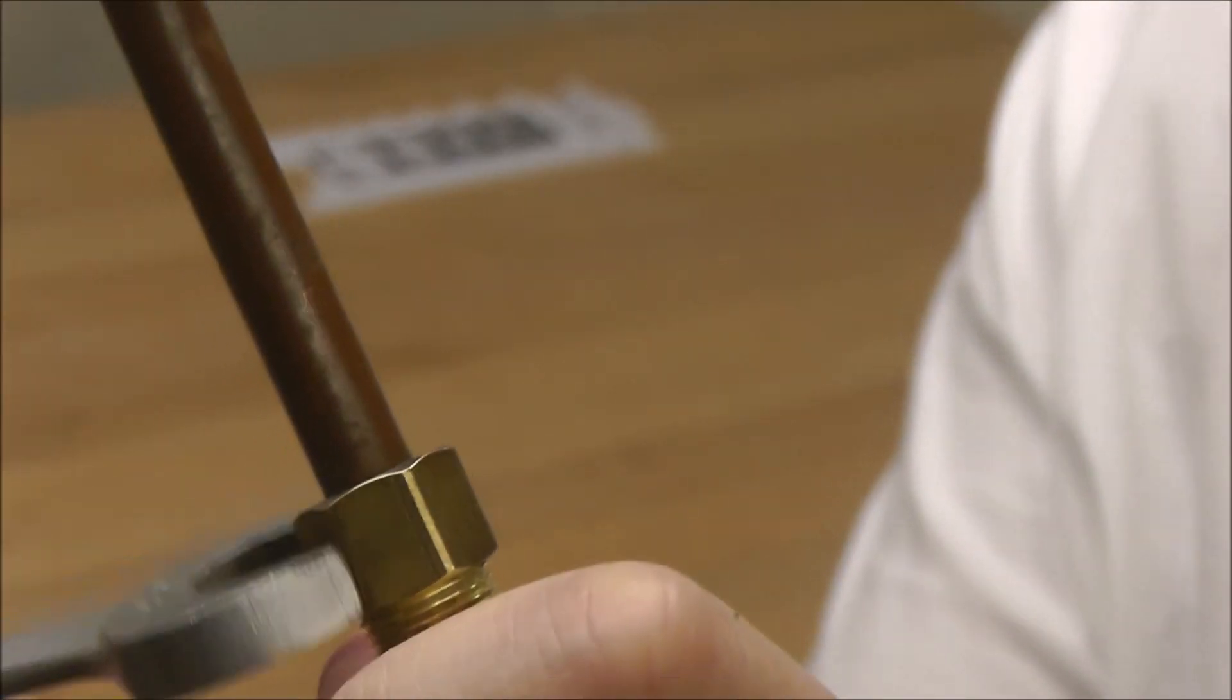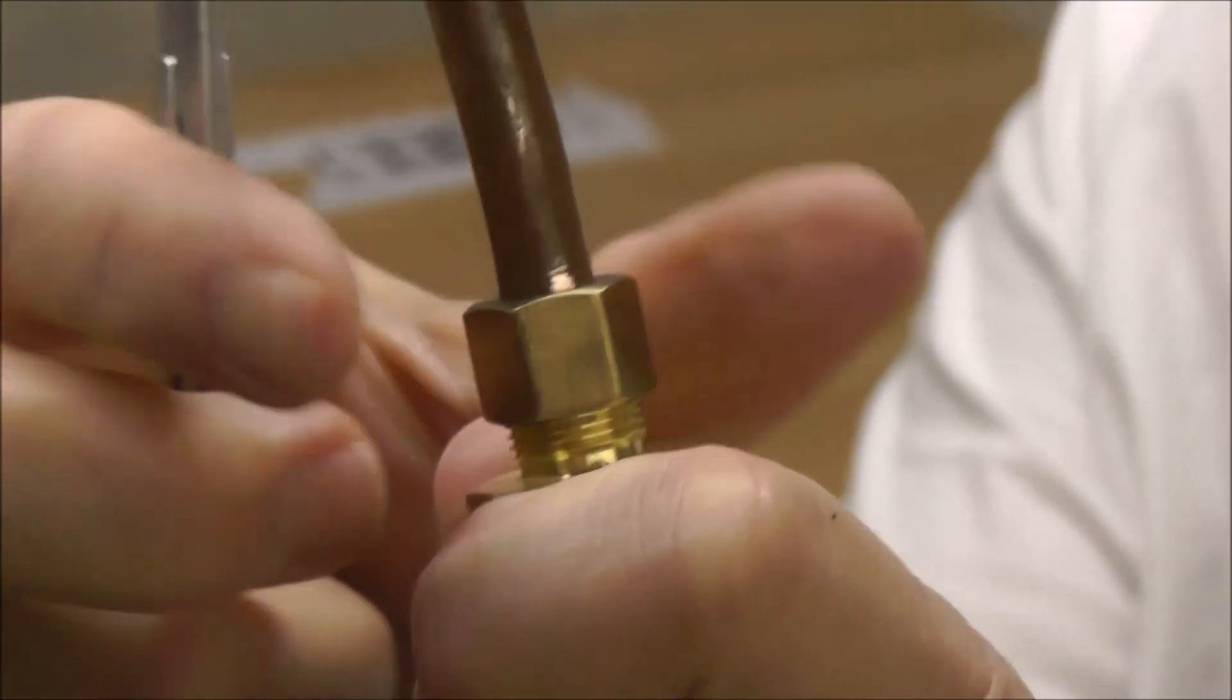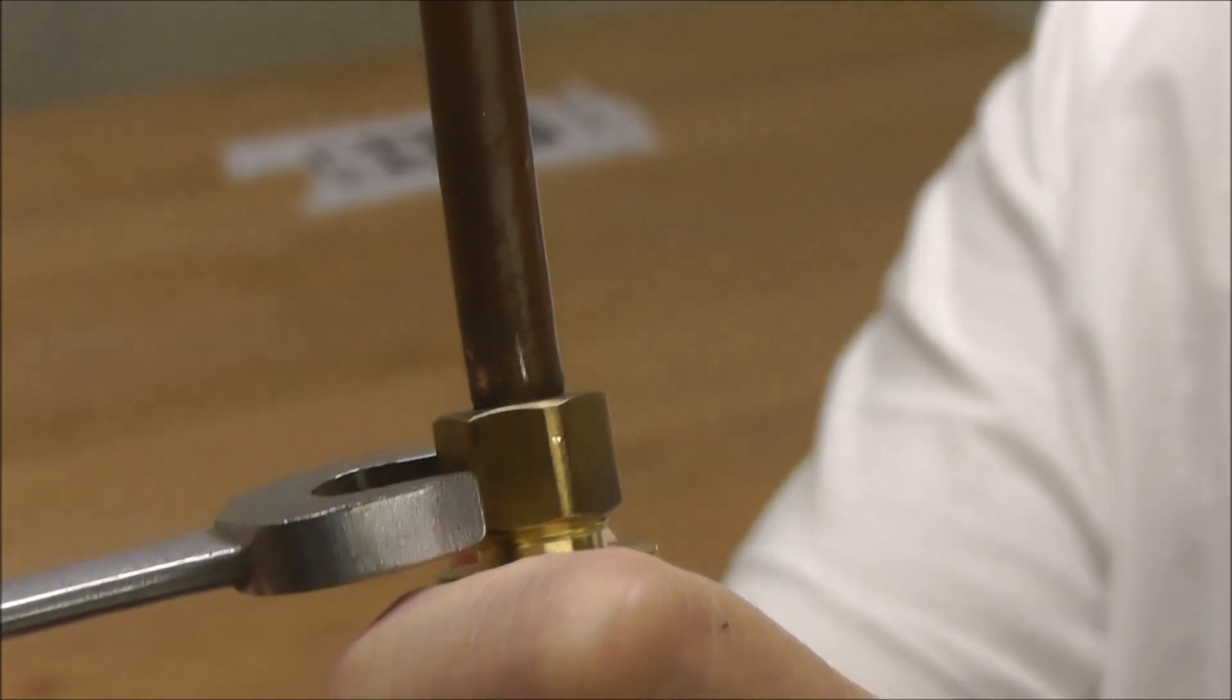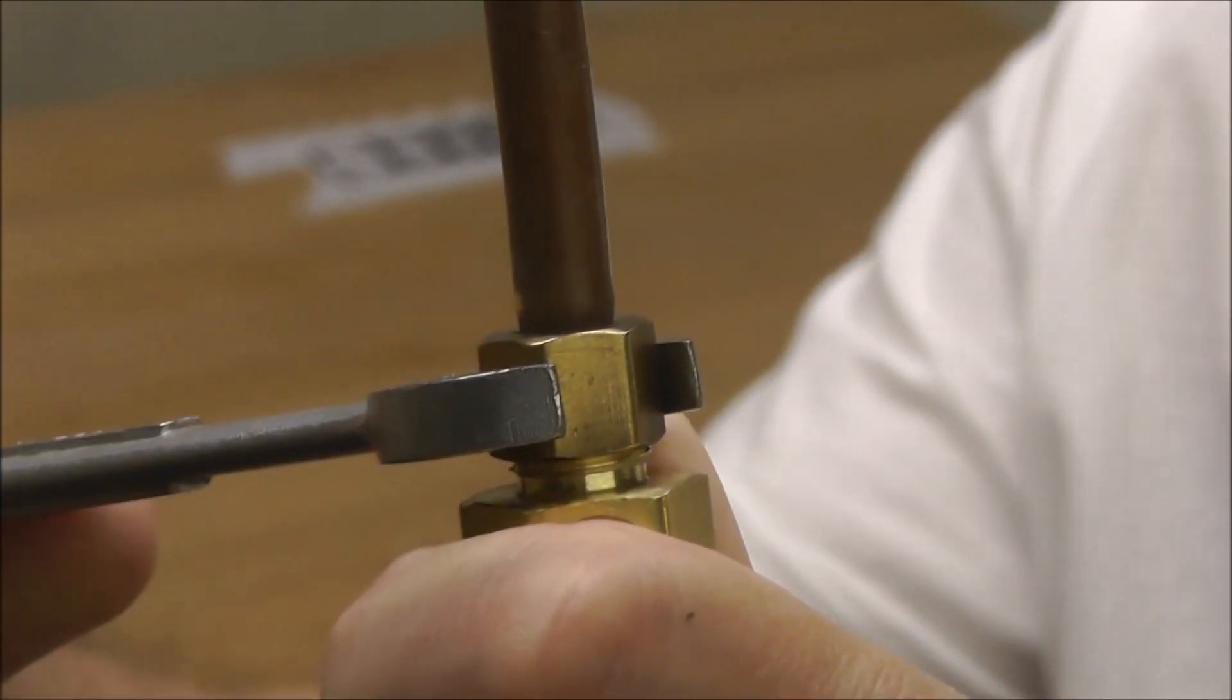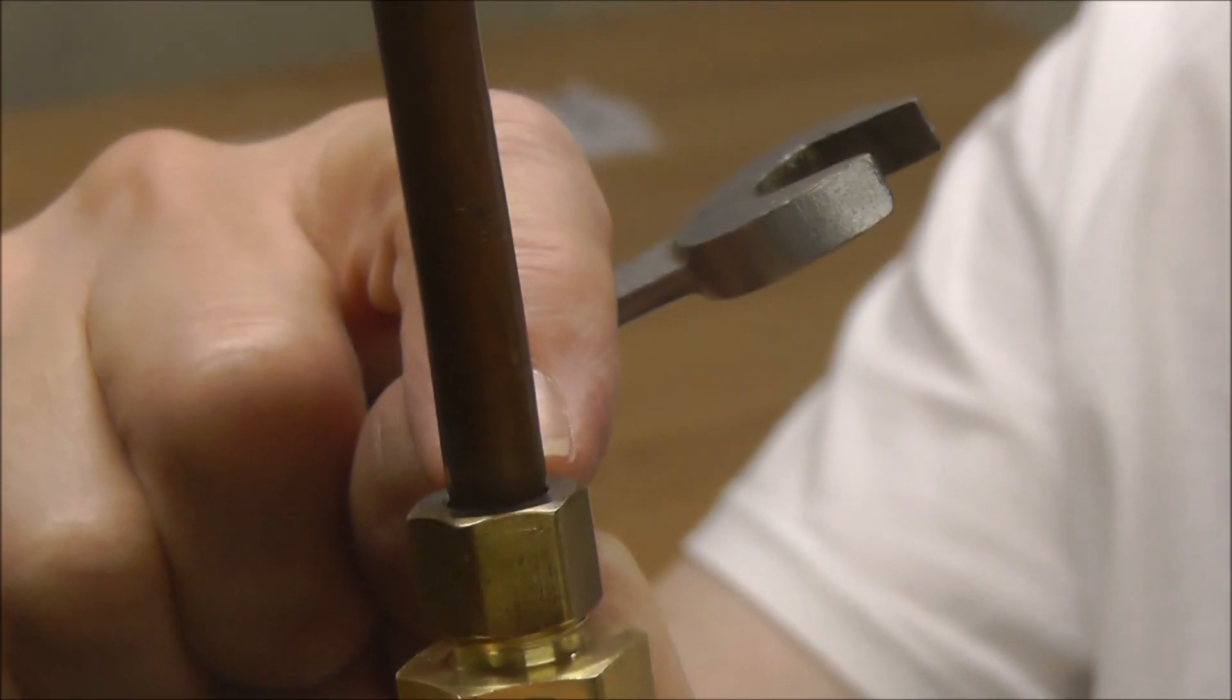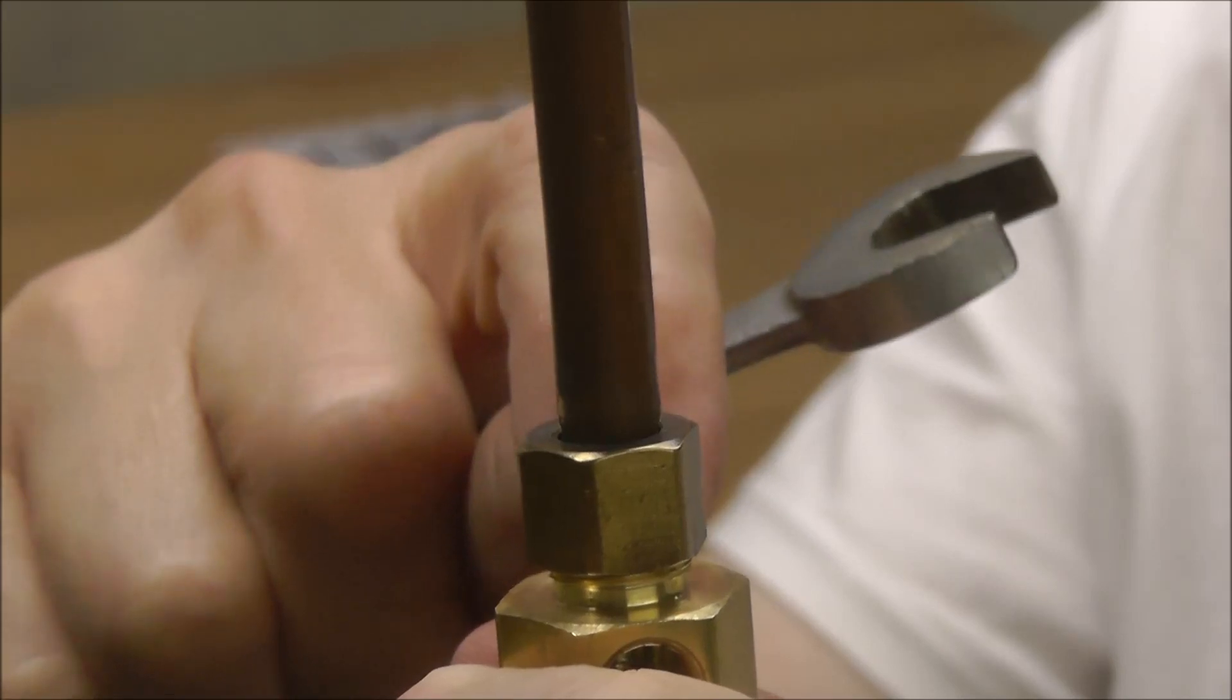You want to tighten it down pretty good because this compression ferrule in there needs to be able to squeeze against this pipe and it needs to tighten it down all the way. So you want to make sure that you give it a really good tug without breaking it so that this will seal because it's going to use the compression ferrule against the mating fitting that's concave to give you that perfect seal.